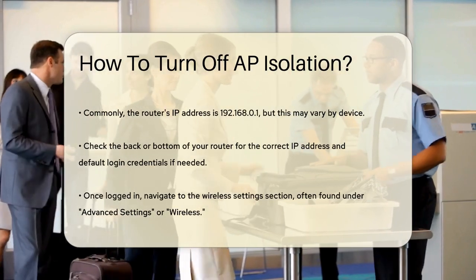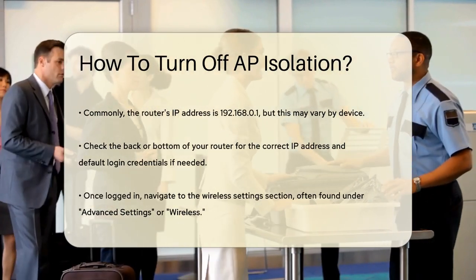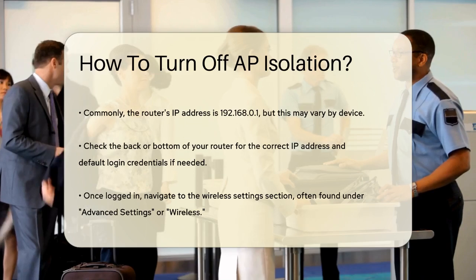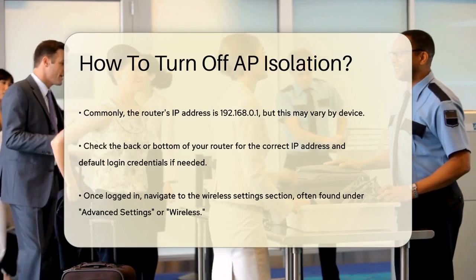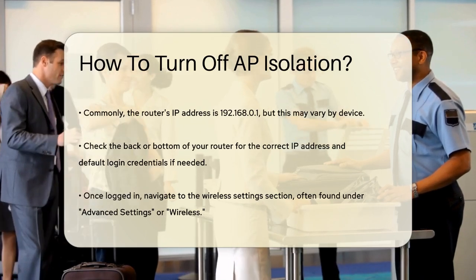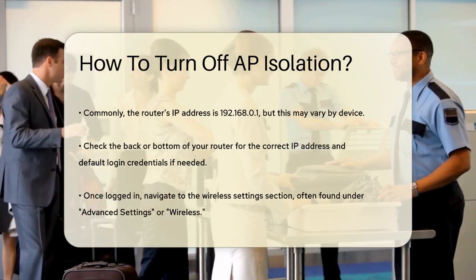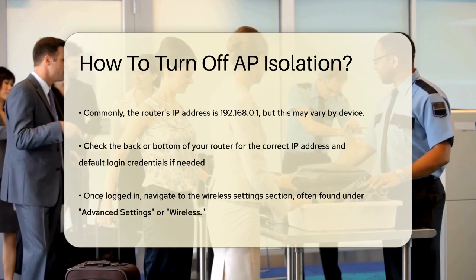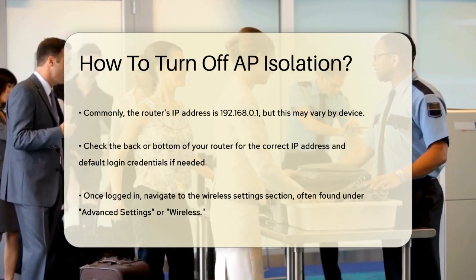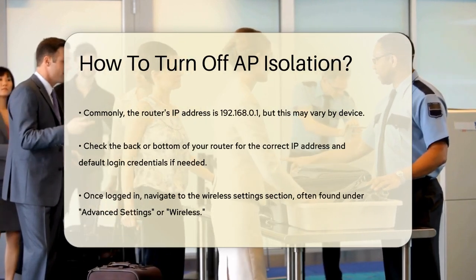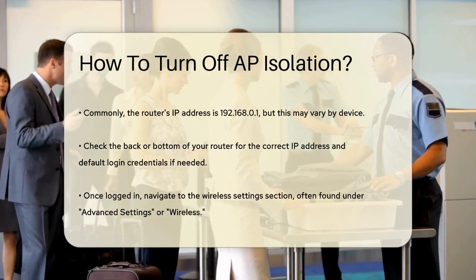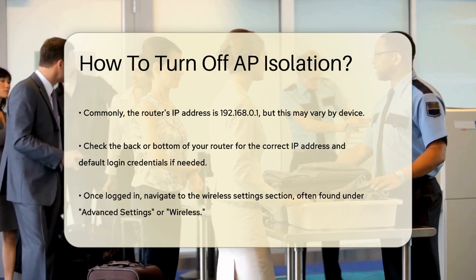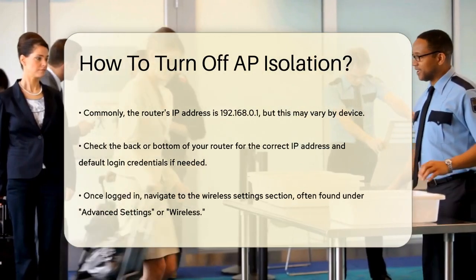For example, if you have a TP-Link router, you would type 192.168.0.1 into your browser's address bar. For other routers, you might need to check the back or bottom of the device for the IP address or the default login credentials.